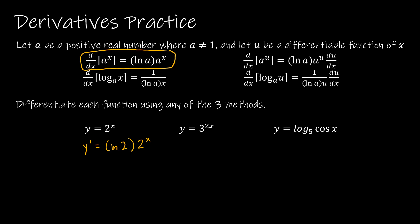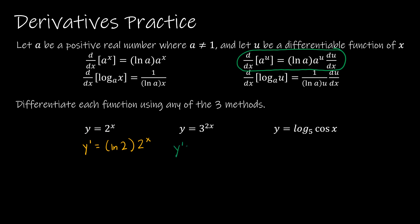For the second question, the same idea, except now I have a derivative for my exponent. The exponent is 2x, and the derivative of 2x is 2. So the derivative is the natural log of the base — natural log of 3 — times 3^(2x), times 2. Typically written as 2 natural log of 3 times 3^(2x).